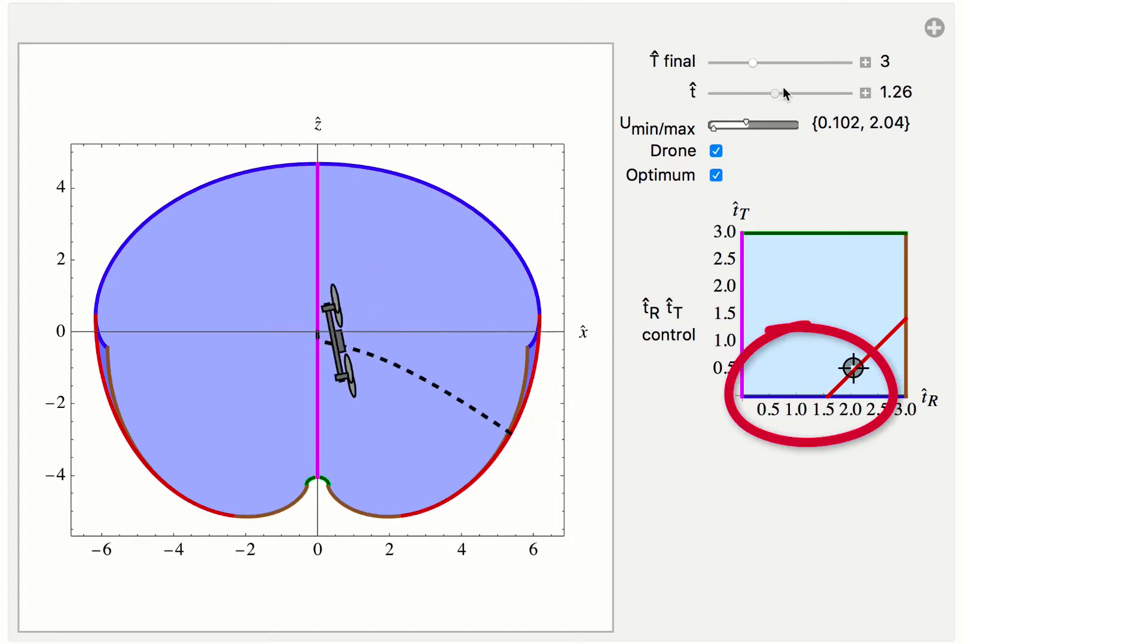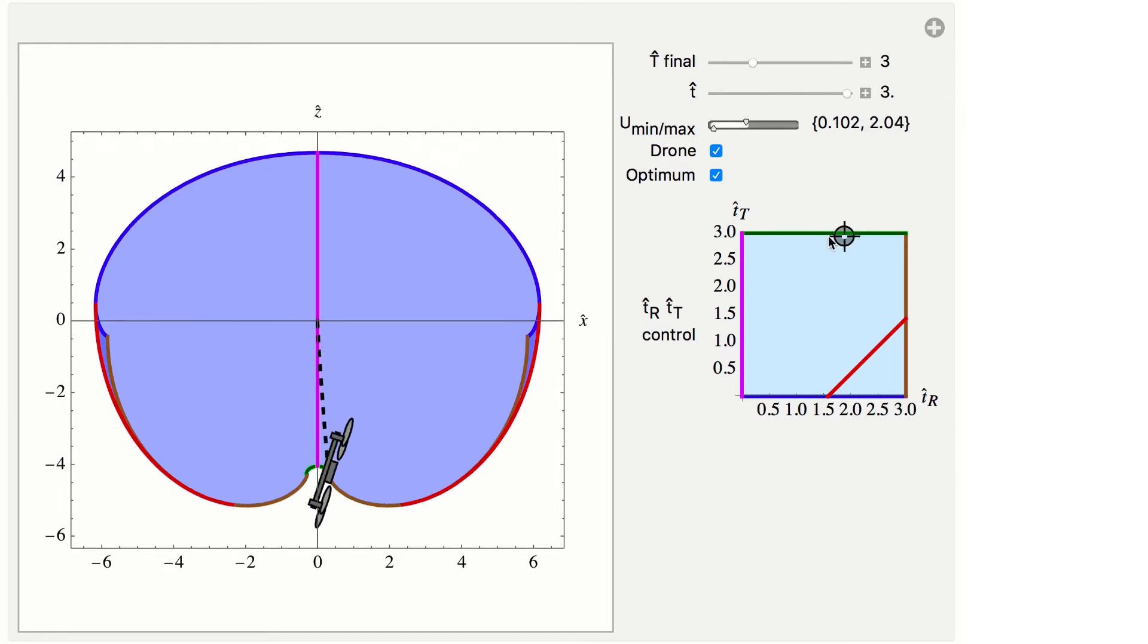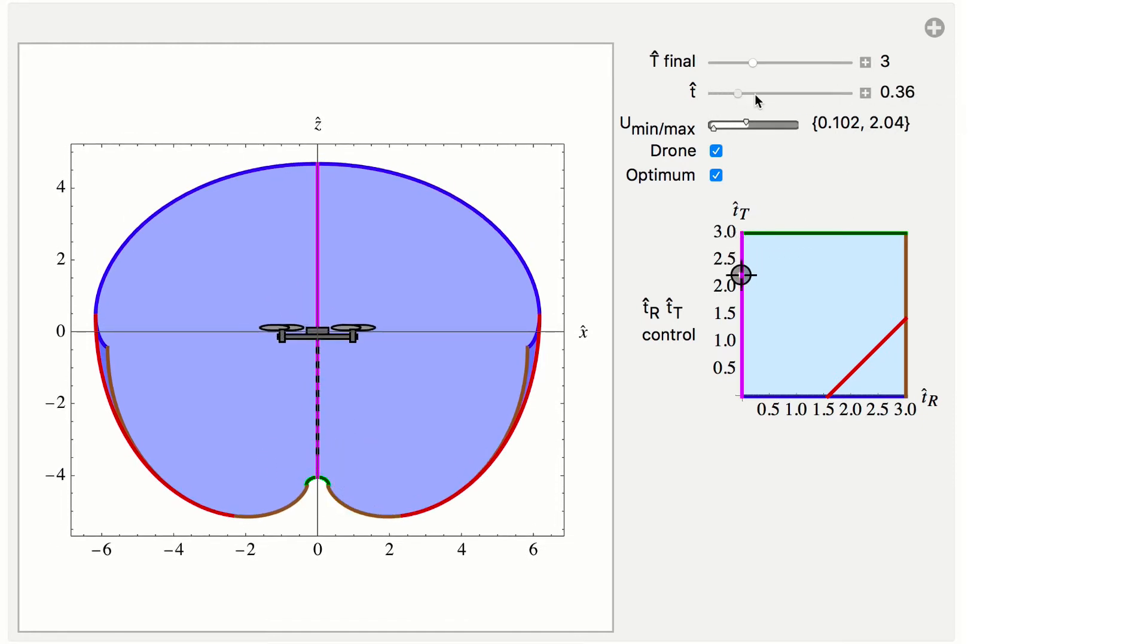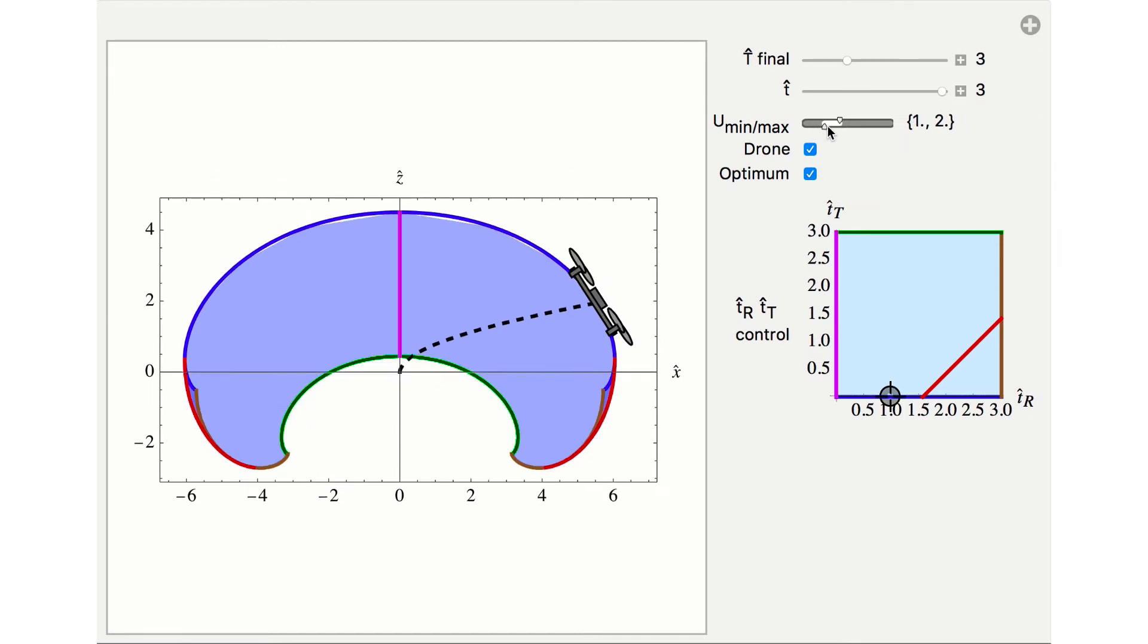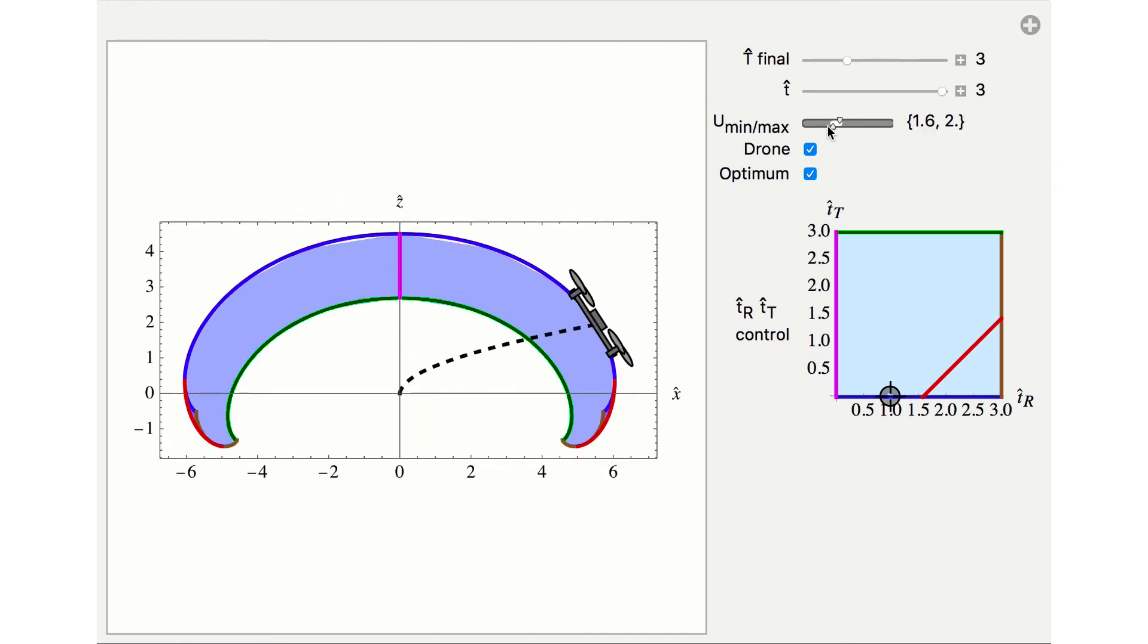The optimal control inputs that generate the boundary of the reachable set are drawn in bold colors on both the X-Z plot and the TR-TT control inputs. The drone rotates at maximum angular speed for time less than TR and flies with no rotation afterward. The drone moves with minimum thrust for time less than TT and maximum thrust afterward.